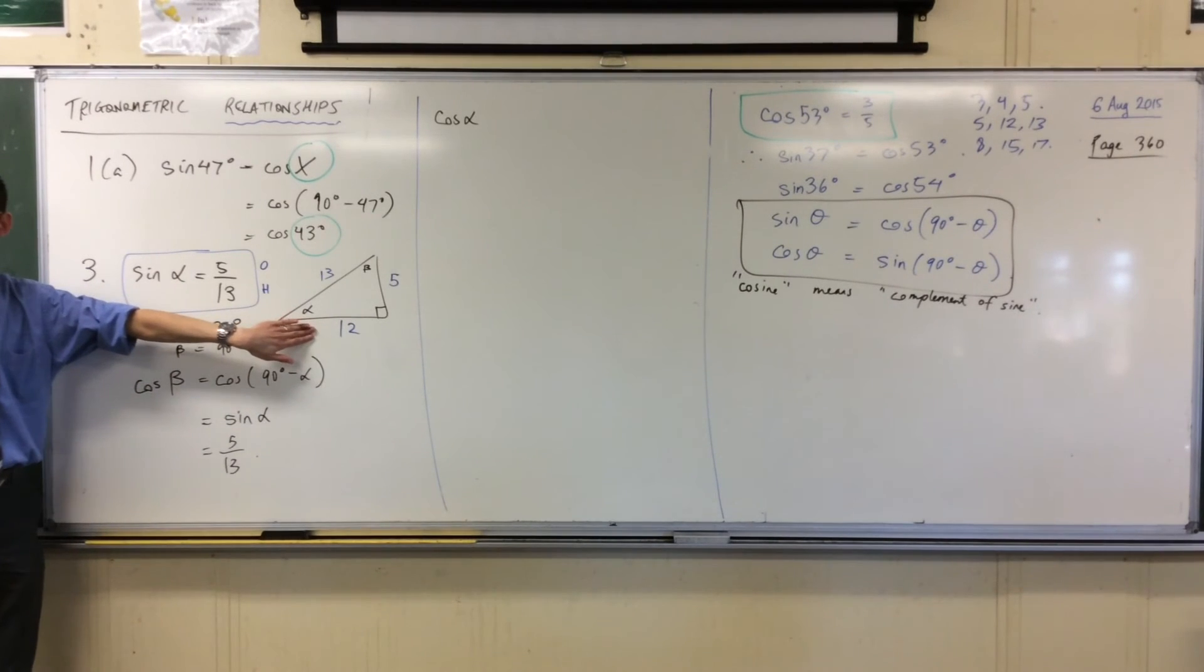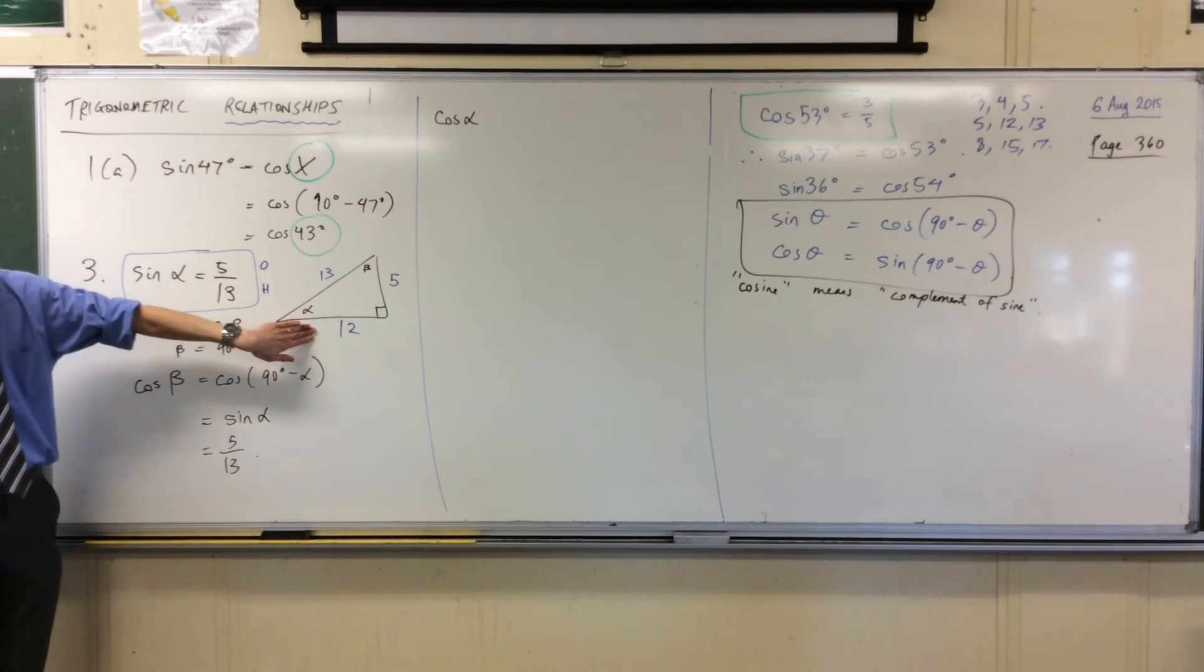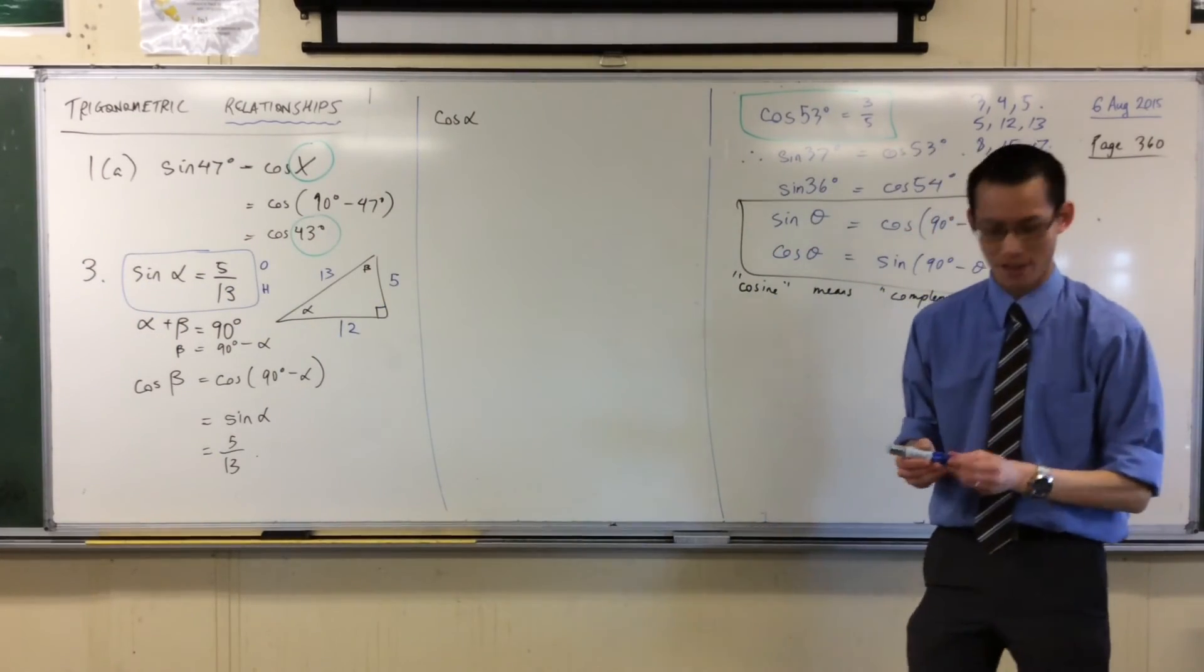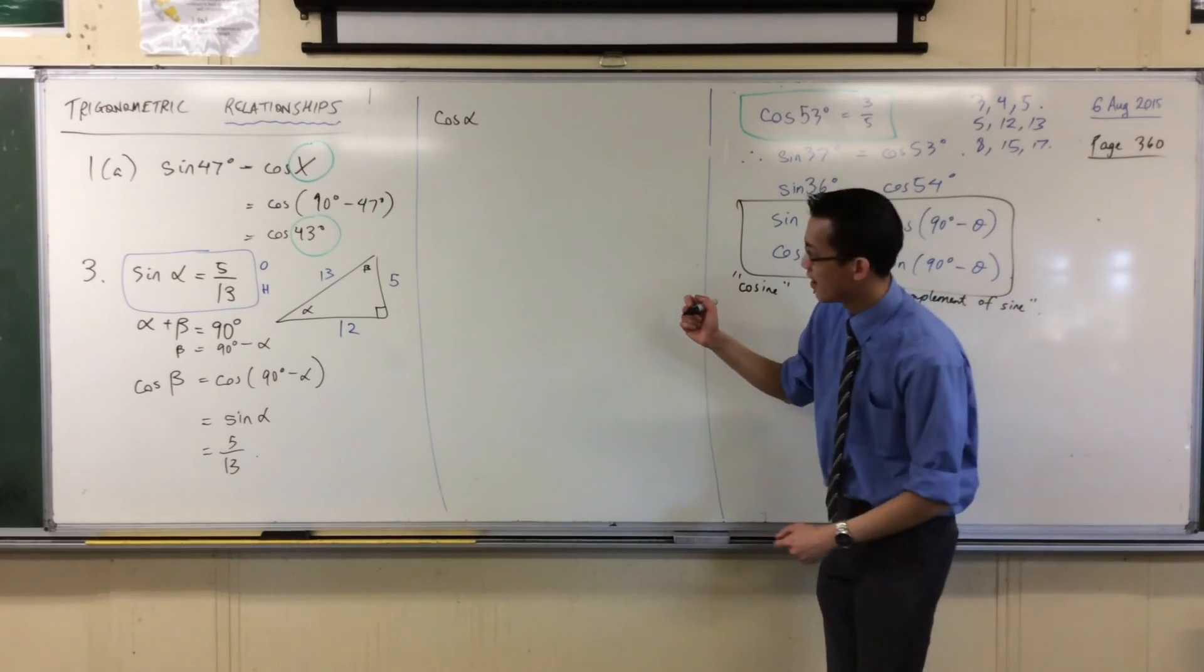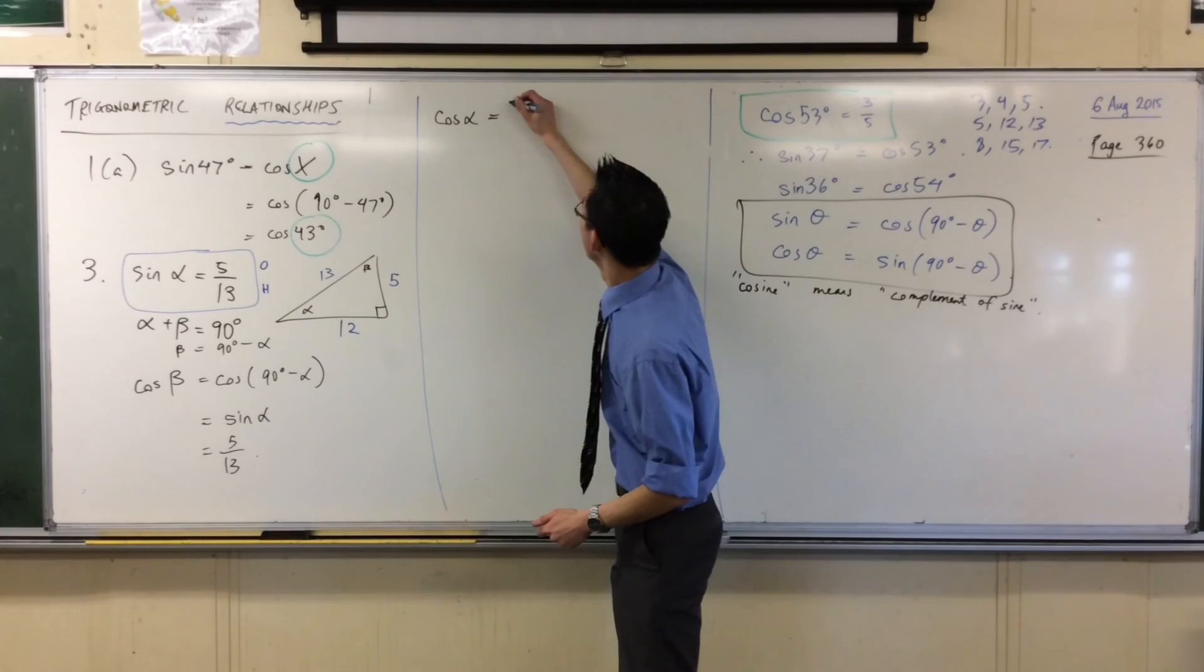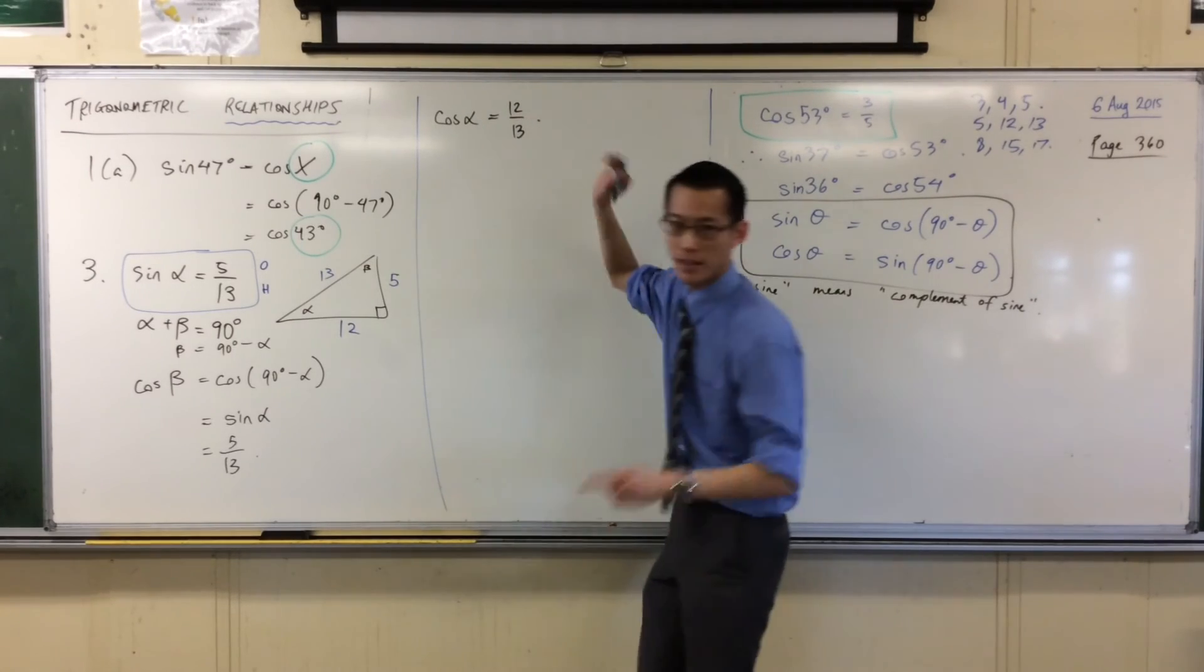So, now I know what this side is. So, if I want cos alpha, come back to my other color, that's adjacent on hypotenuse. So, which pair of sides am I going to take? 12 on 13. 12 on 13. There. I'm done.